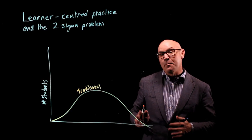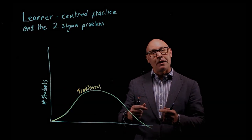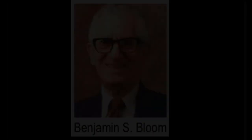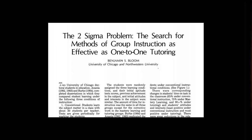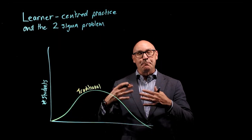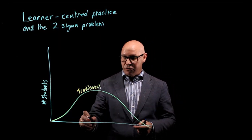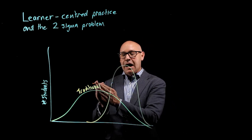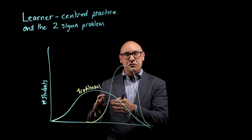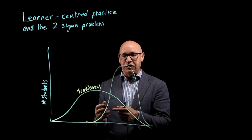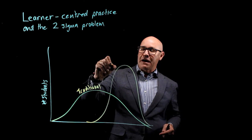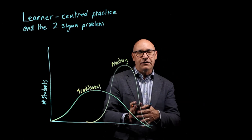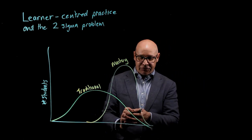In 1984, Benjamin Bloom published a paper reporting on a problem that he described as the two sigma problem. He basically found that students who learn through a mastery learning model have performance that is one standard deviation above the traditional classroom chalk-and-talk direct instruction type model.